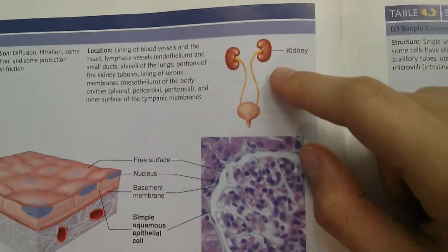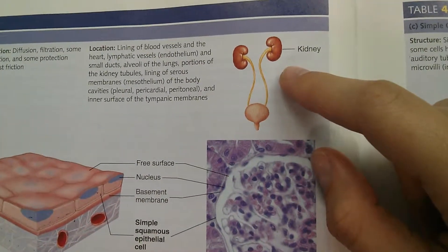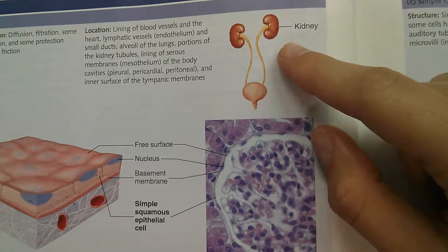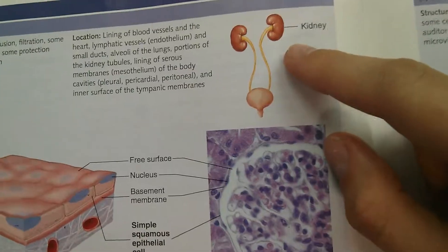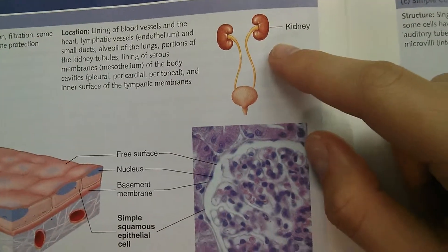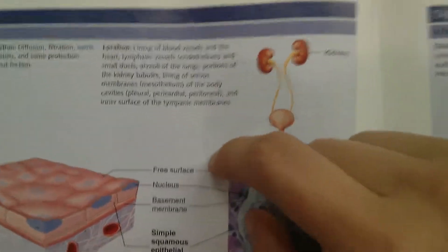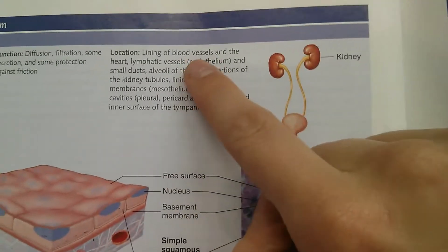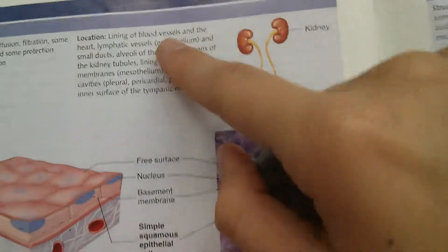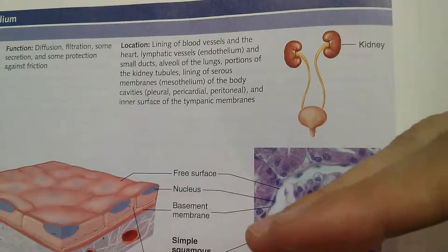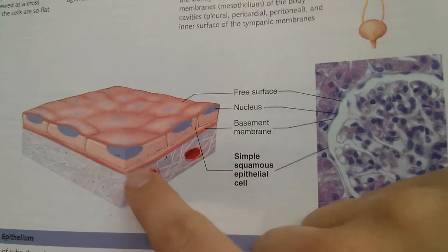One example is the kidneys, because the kidneys filter the blood — they filter out all the wastes and things that shouldn't be there — and excrete them in the urine. So there has to be a high ability for filtering in the kidneys. Other places are blood vessels, because a lot of molecules have to move in and out of the bloodstream, so the veins and other vessels are made out of these cells.